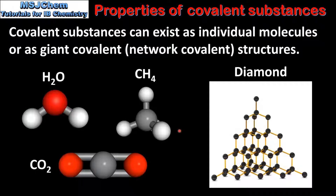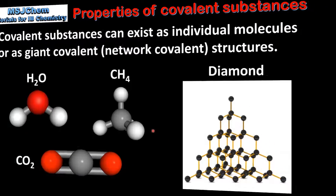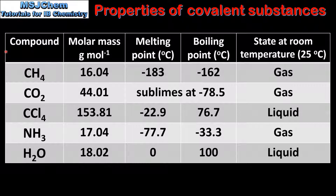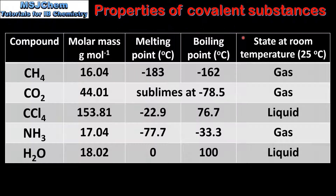So next we'll have a look at the properties of both types of substances. We'll start by looking at the melting points and boiling points of molecular compounds. In this table we have examples of molecular compounds such as methane, carbon dioxide, carbon tetrachloride, ammonia and water. We also have the molar mass, the melting point, the boiling point and the state at room temperature.